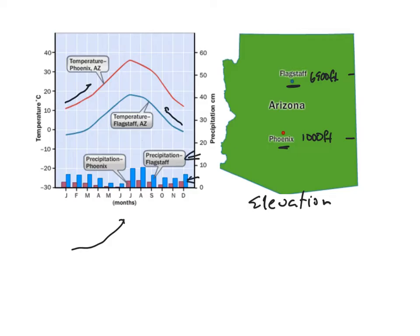Flagstaff is going to be in blue again and Phoenix in red. So you can see that with higher elevation we generally will get cooler temperatures and oftentimes we'll end up with a little bit more rain.